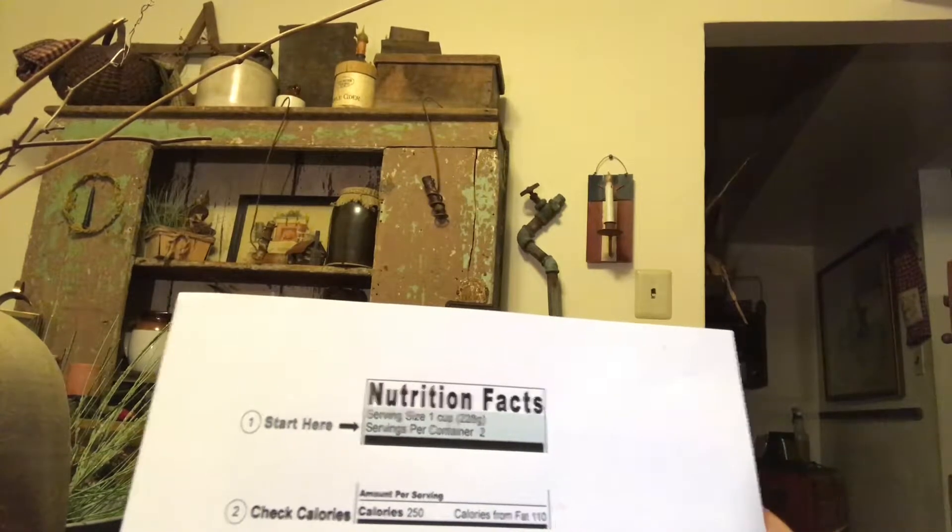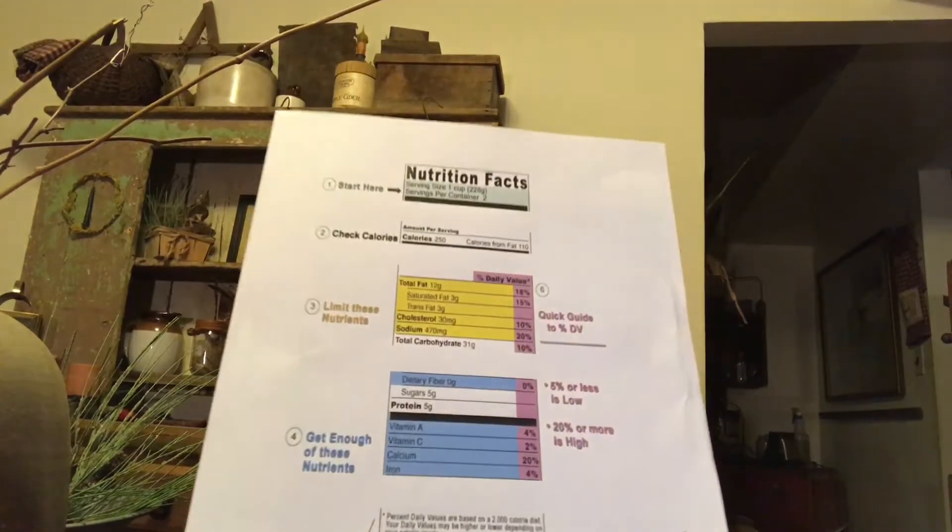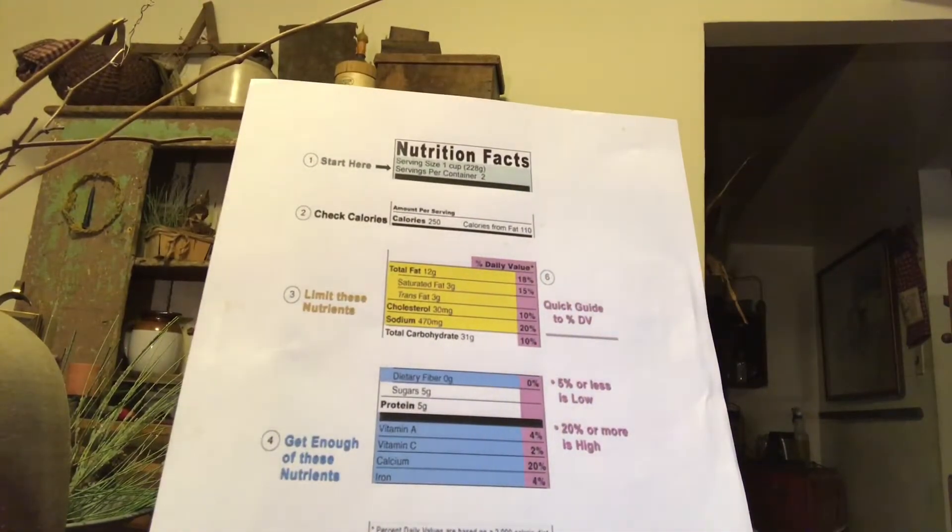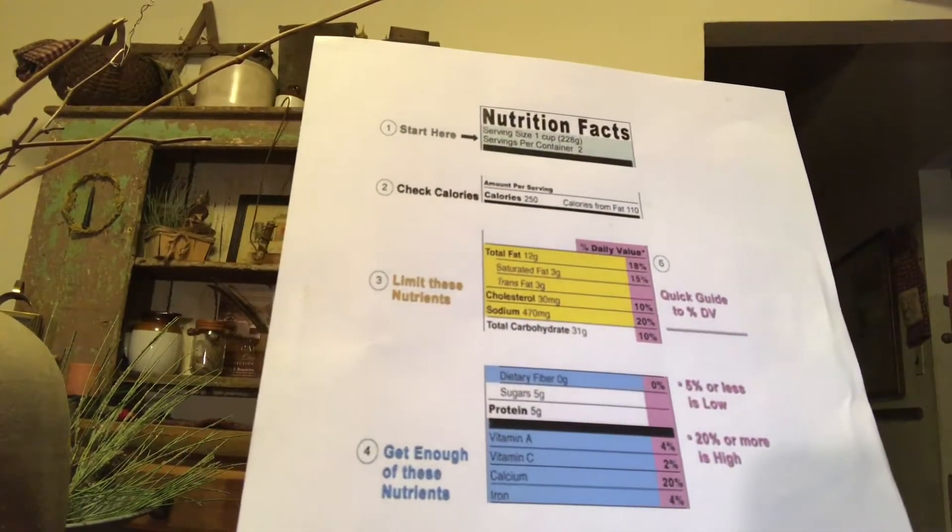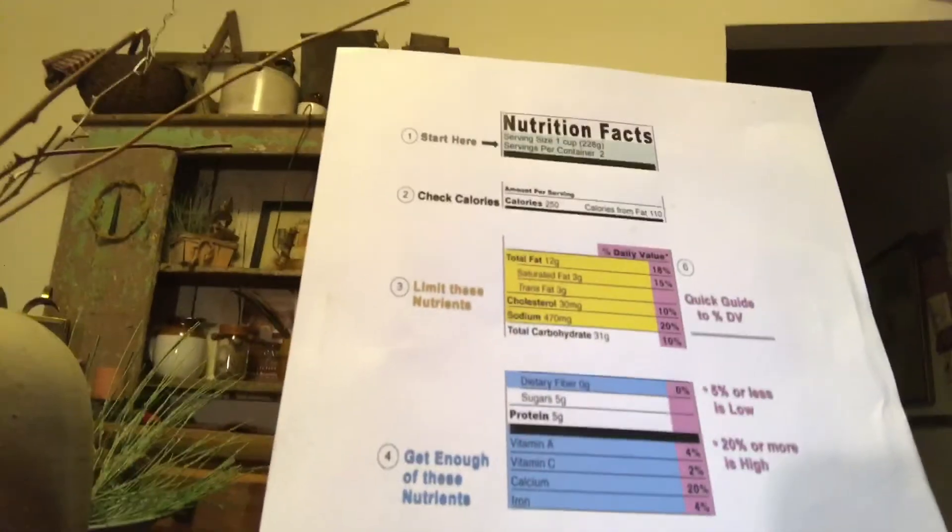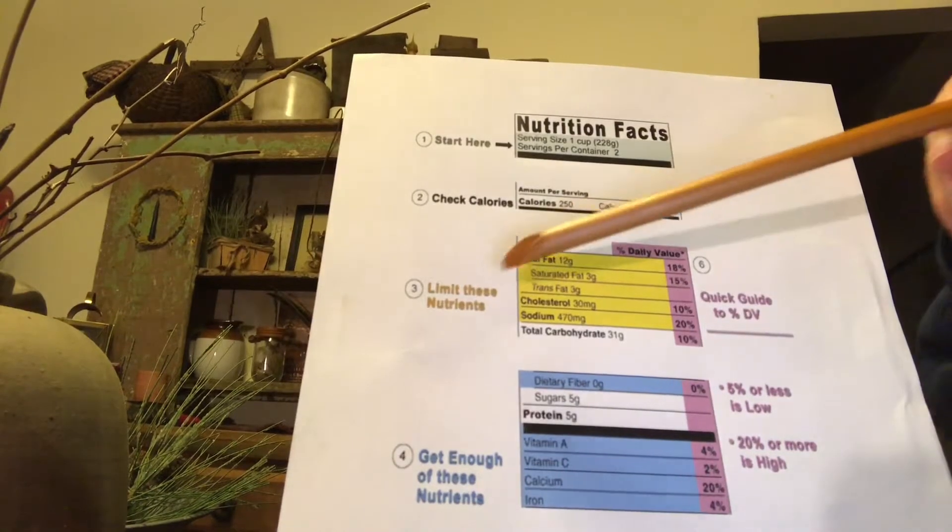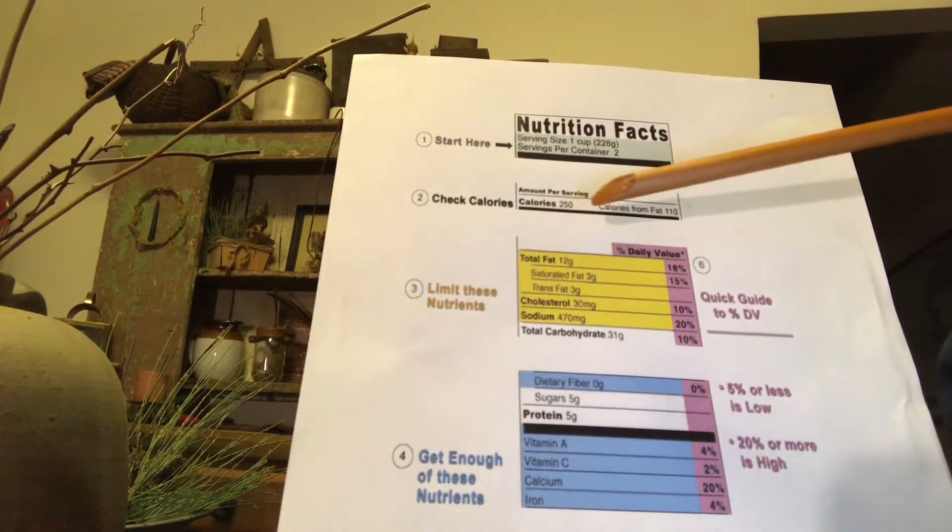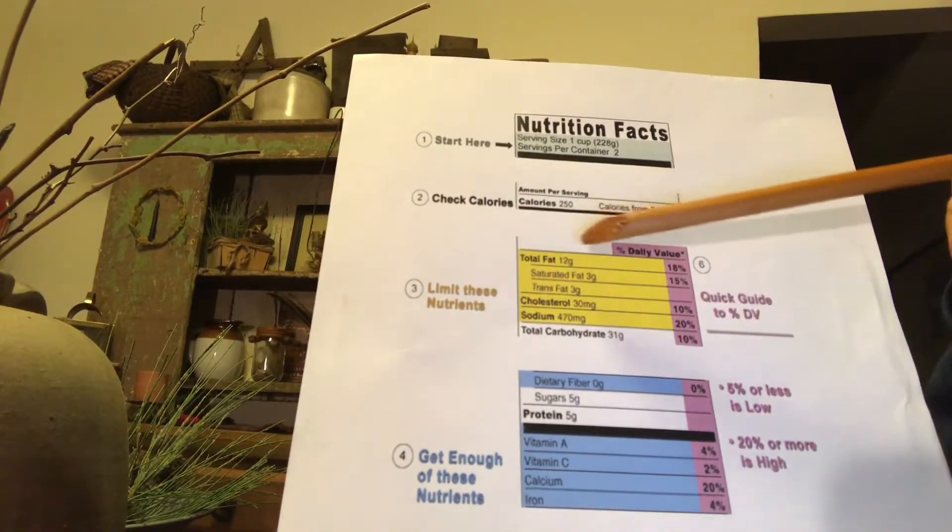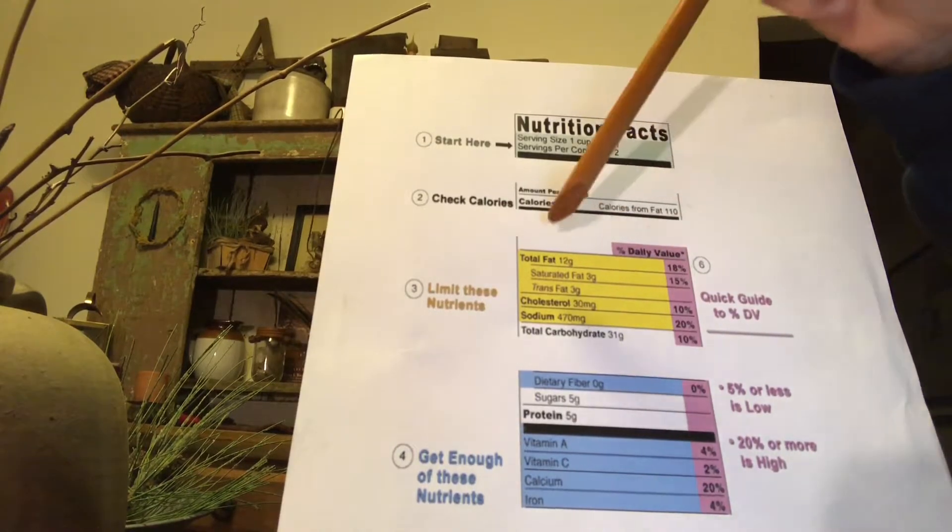Now, the next section, I'm actually going to lift this up so that you can see it a little bit better. And this section in the yellow is, I call this, limit these nutrients because these are the carbs. This is the total fats. So if you can see, total fat,